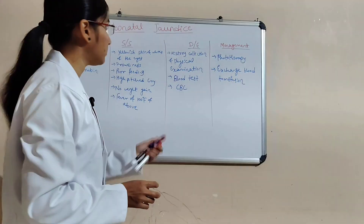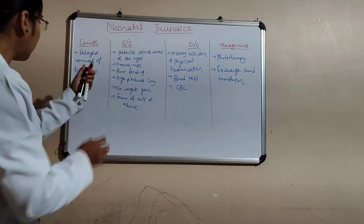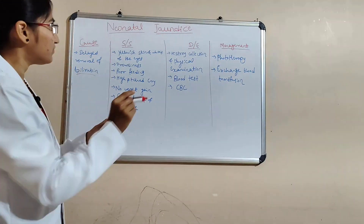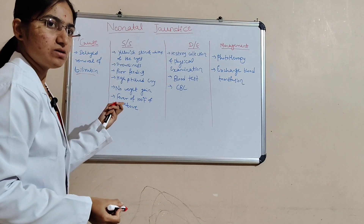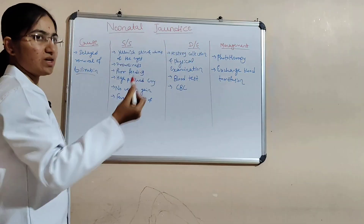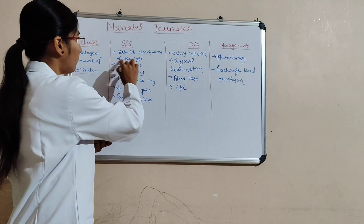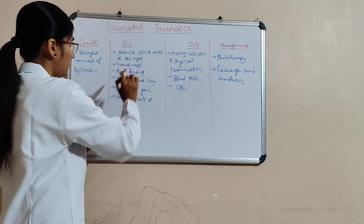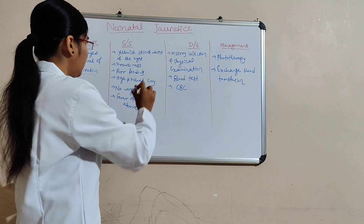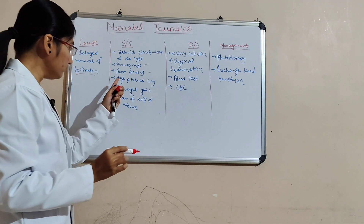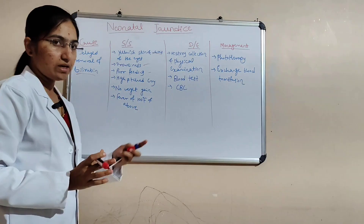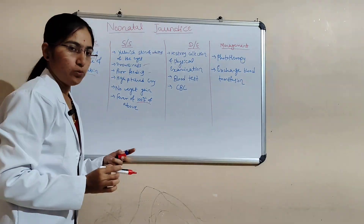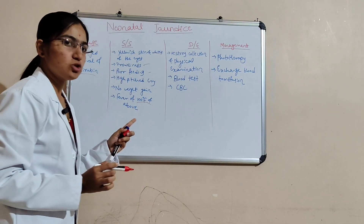Next, the causes: the main cause is delayed removal of bilirubin. And the signs and symptoms include yellowish discoloration of skin and whites of the eyes — the sclera becomes yellow — as well as drowsiness, poor feeding, high-pitched cry, no weight gain, and fever.